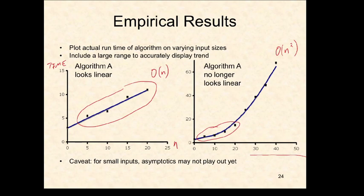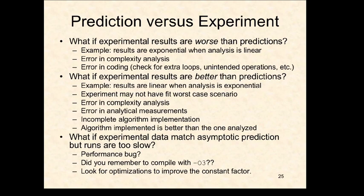What if experimental results are worse than theoretical predictions? For example, we got linear time when we expected binary search behavior. There could be an error in complexity analysis - maybe my Big-O was wrong. Or there could be an error in coding - an extra loop, passing something by value when it should be by reference. Or a simple programming mistake in the implementation.